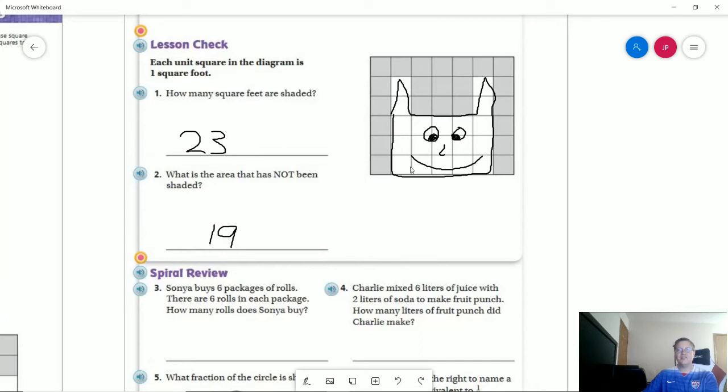And then we have 5, 8, 11, 14, 19 for the area that's not shaded in.